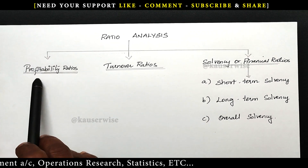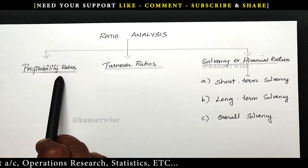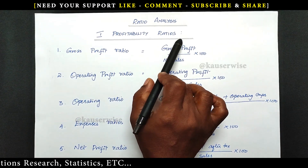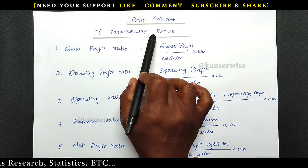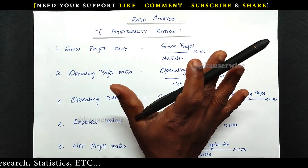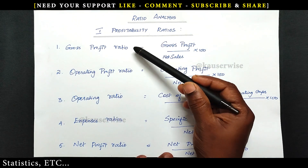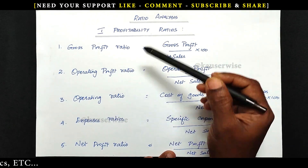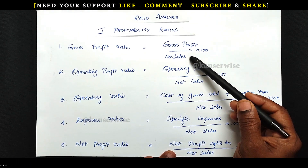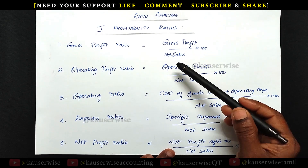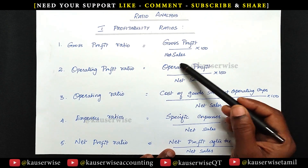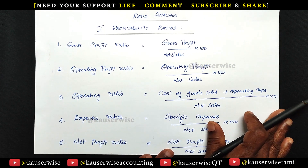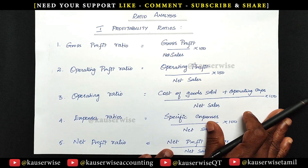The first one is profitability ratio. In the profitability ratio, as I said earlier, it has 15 ratios. The first five ratios are based on net sales. This we have discussed in the previous video — the link is available in the description box.